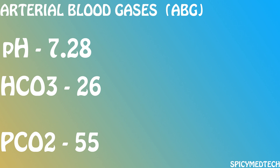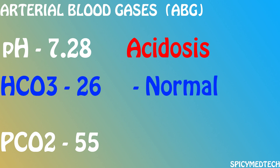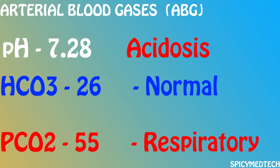Let's take a look at this example: a pH of 7.28, HCO3 of 26, and PCO2 of 55. Step 1: with normal values of 7.35–7.45, 7.28 falls short of 7.35, making it an acidosis. The HCO3 is at 26, within the normal range of 22–26, so it is normal. The PCO2 is at 55, outside the normal range of 35–45, making it abnormal. So we can conclude it is a respiratory acidosis.